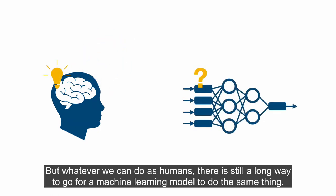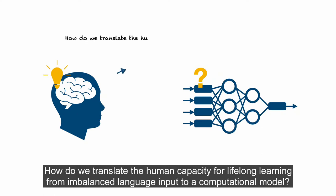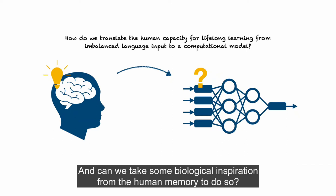But whatever we can do as humans, there's still a long way to go for a machine learning model to do the same thing. And so our question for this project is, how do we translate the human capacity for lifelong learning from imbalanced language input to a computational model? And can we take some biological inspiration from the human memory to do so?